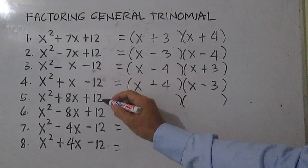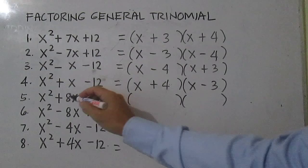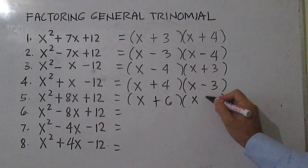For number 5, we are still working with 12 as the constant, but the middle term is 8X. Think of two numbers that give you a product of 12 and a sum of 8 — this time you have 6 and 2. So you have X plus 6 and X plus 2.